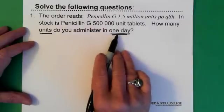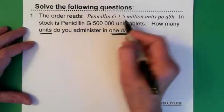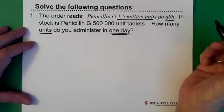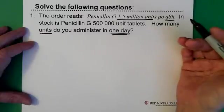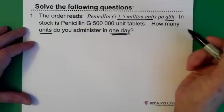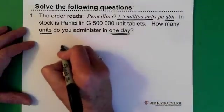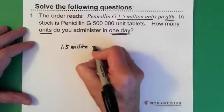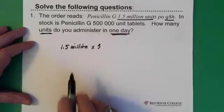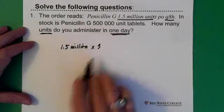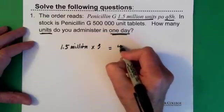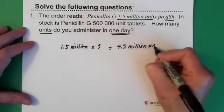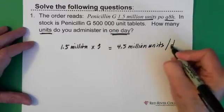So, how many units do you administer in one day? Well, the order says you give 1.5 million units every 8 hours. So, that means you're giving 1.5 million units three times a day, right? So, you just say, alright, I'm going to take my 1.5 million and multiply it by 3. And basically we're taking the 1.5 and multiplying it by 3. So, that gives us 4.5 million units per day.